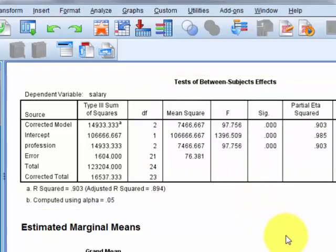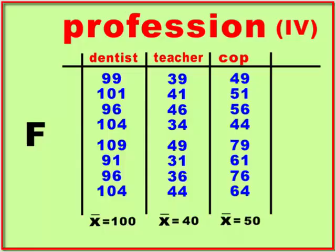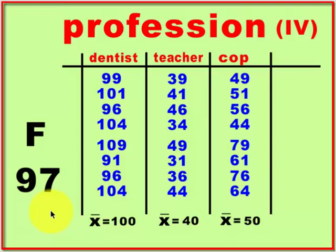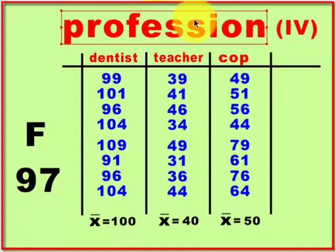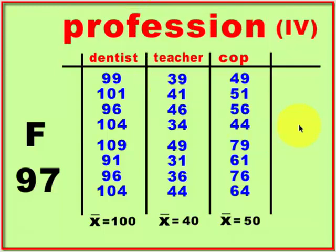Our F value is 97. The rule of thumb is if your F ratio is greater than about 3 or 4 — it depends on sample size — you're going to have a significant difference. So we have a significant difference between the IV profession.